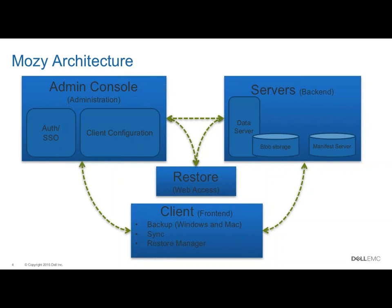Then we have a split into two other sections: the client side, which is the front end, and the server side, which is our backend. There's also the restore web access area which accesses all points. The client front end covers the backup software — Windows or Mac installation, Mosey Sync software, or the restore manager — these all run on your computer. The backend side is our servers, where we monitor and identify any issues. On the backend, we have the data servers, the storage, and our manifest servers.